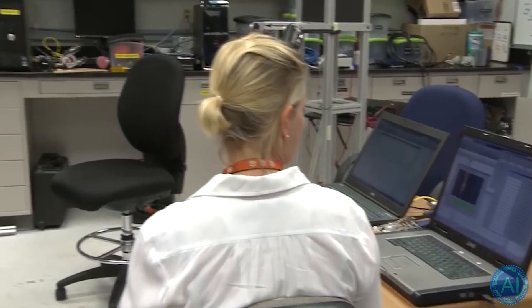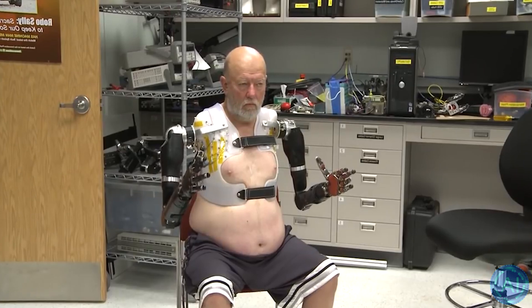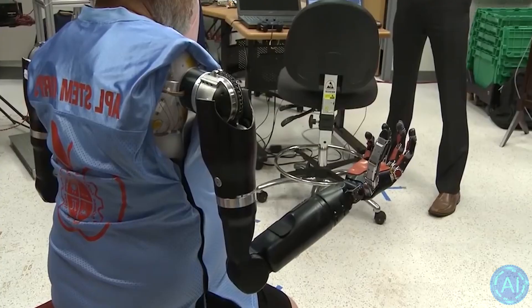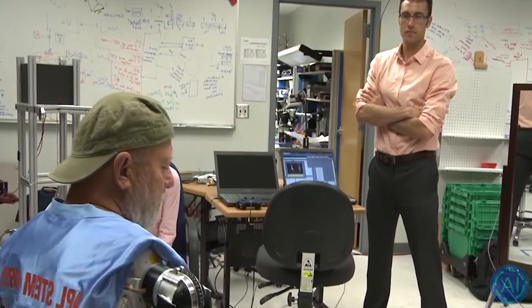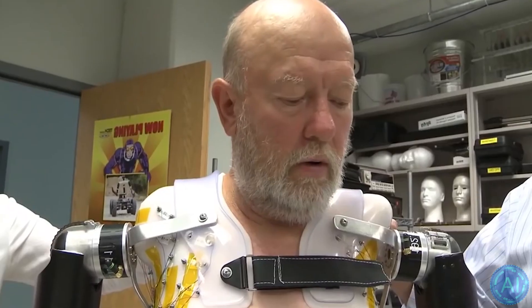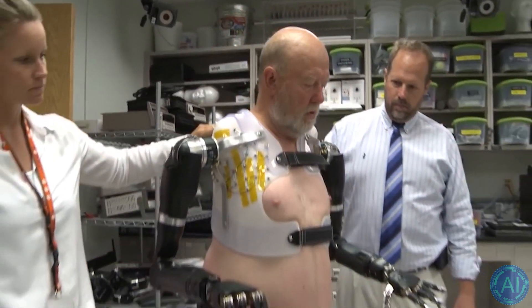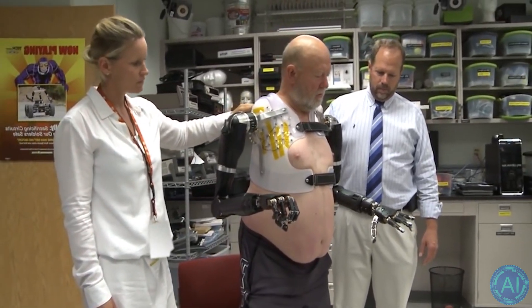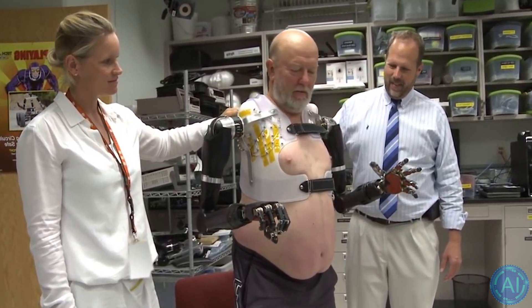First, APL started work on their prosthetics by working on their pattern recognition systems which work similar to machine learning. This pattern recognition system looks at electrical signals that come from the brain into the user's chest muscles to appropriately move the user's arms. The training and practice was actually done in a virtual reality system where the amputee controlled a virtual arm instead of going right to a real robot arm.